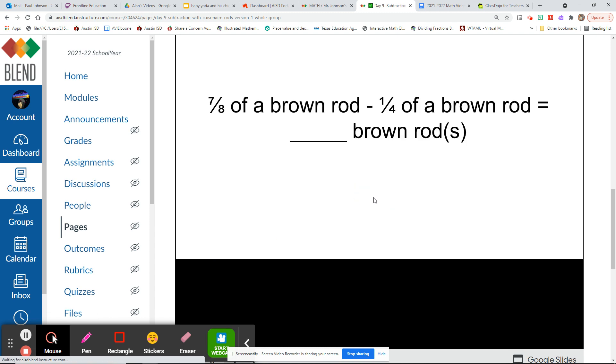Next slide. Seven-eighths of a brown rod, minus one-fourth of a brown rod. So they're moving us kind of quick because they know that we know how to add fractions. So if you need to review these, review them. This is already, we've gone from common denominators to mixed numbers, and we're already subtracting with different denominators. So make sure that you're working on stuff like that, okay?